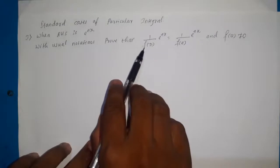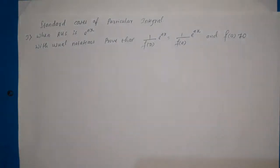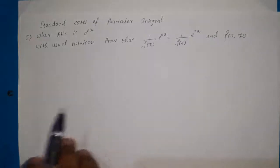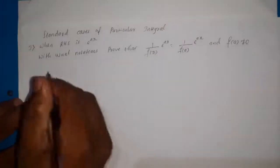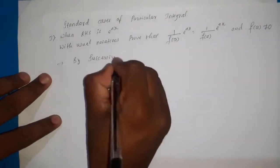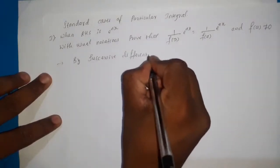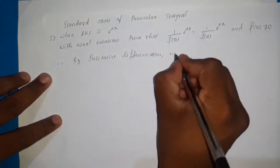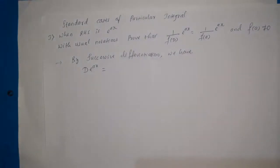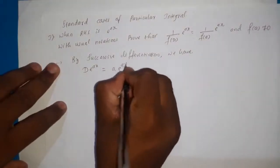Here f(D) is the symbolic form of the differential equation, and f(a) means we substitute D equal to a. Now let us prove this. By successive differentiation, we have D of e^(ax). Capital D means d/dx, so d/dx of e^(ax) is a·e^(ax).